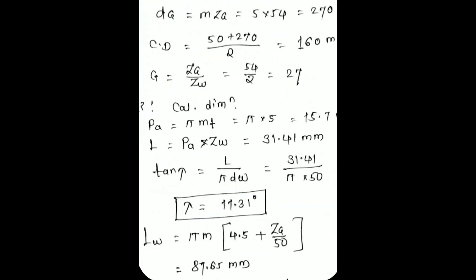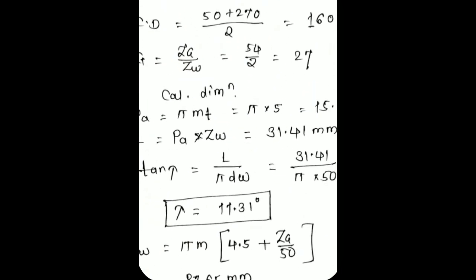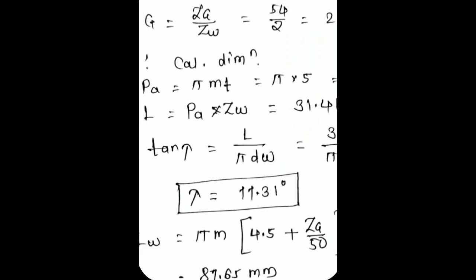Lead is the advancement of the screw: L = pa × zw = 15.7 × 2 = 31.41 mm. Next, tan(λ) = L / (π × dw), where L and dw are known, giving lead angle λ = 11.31 degrees. Then length of form = π × m × (4.5 + zg / 50).